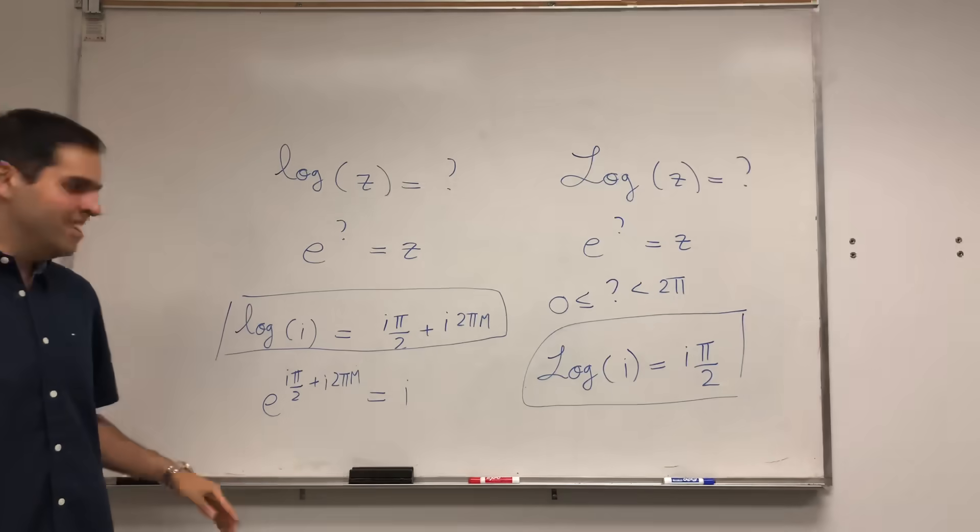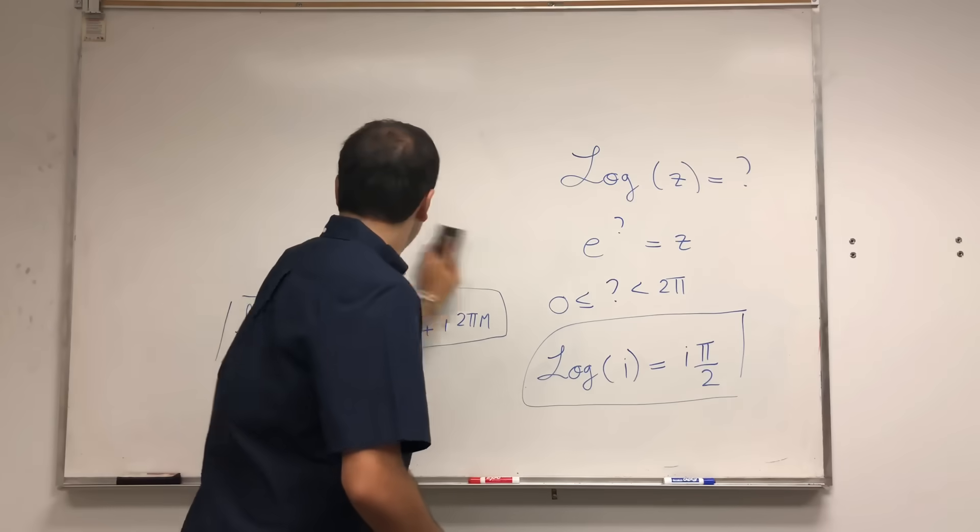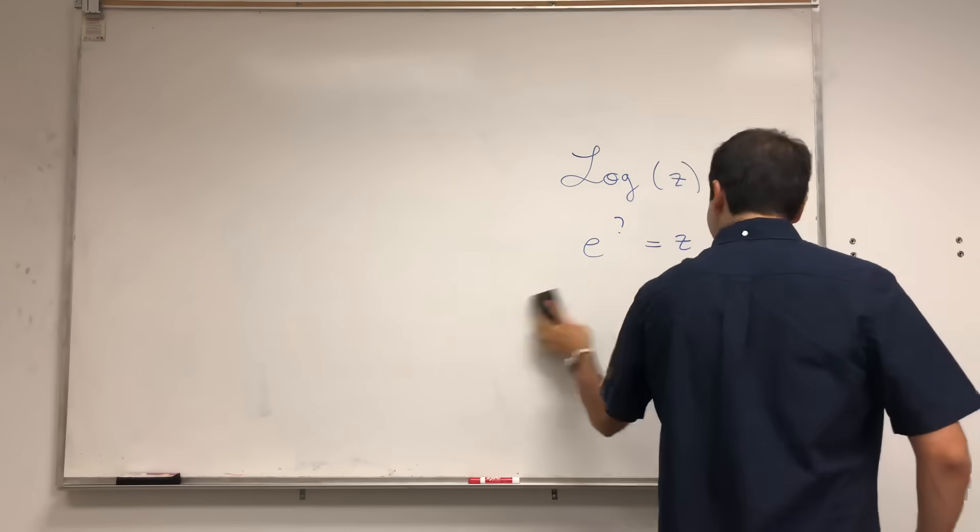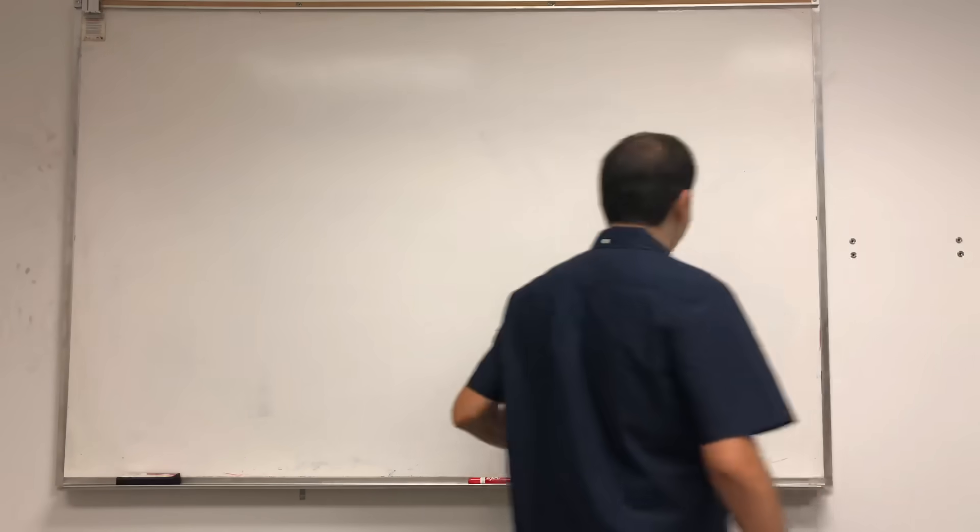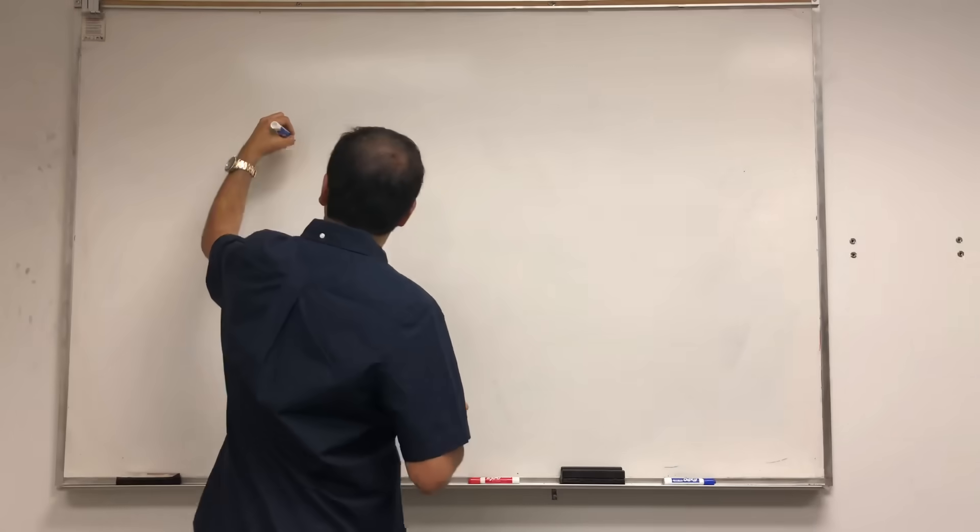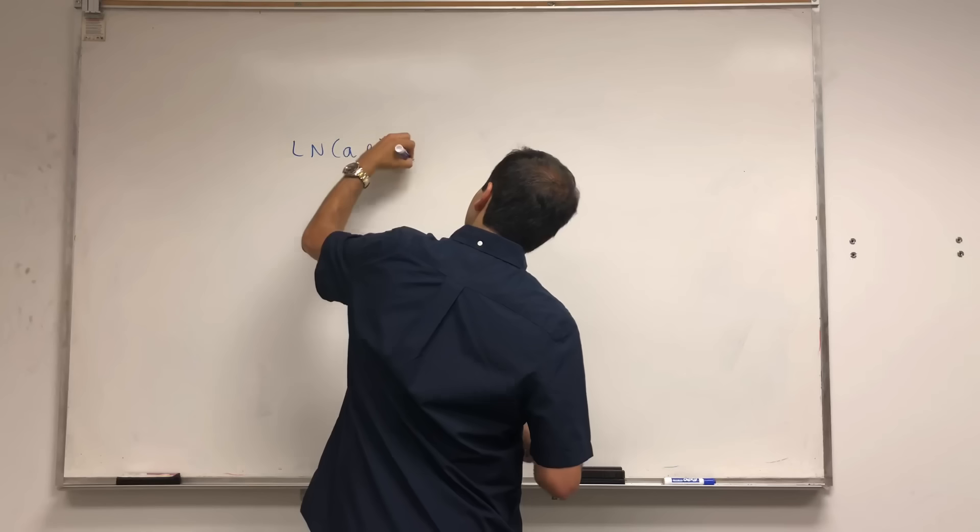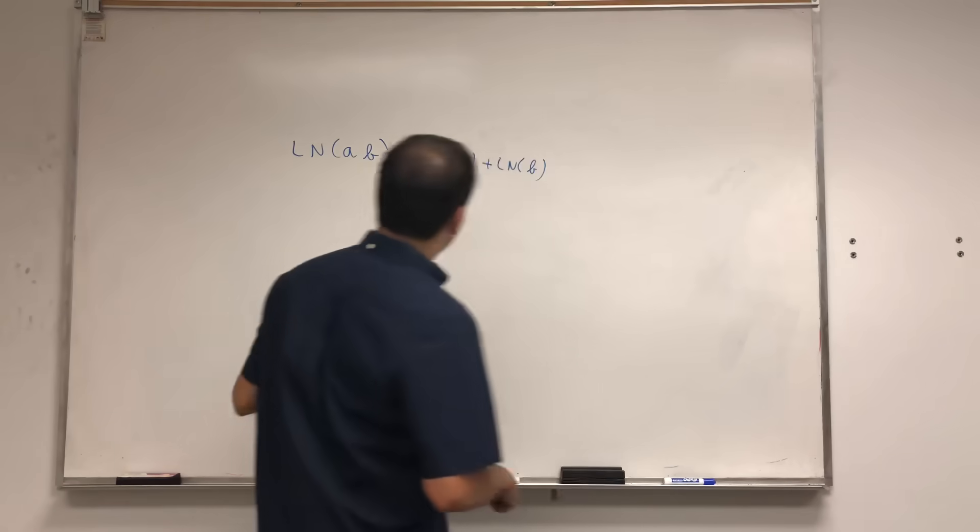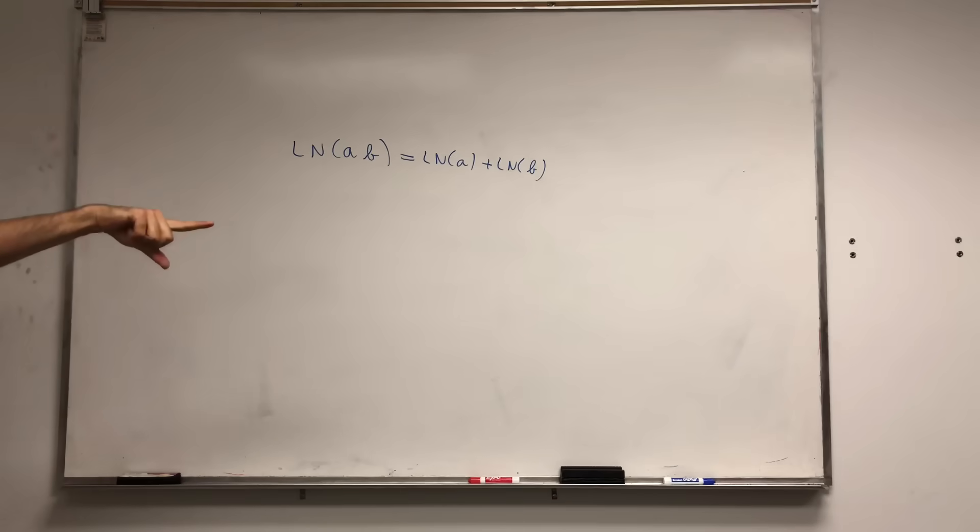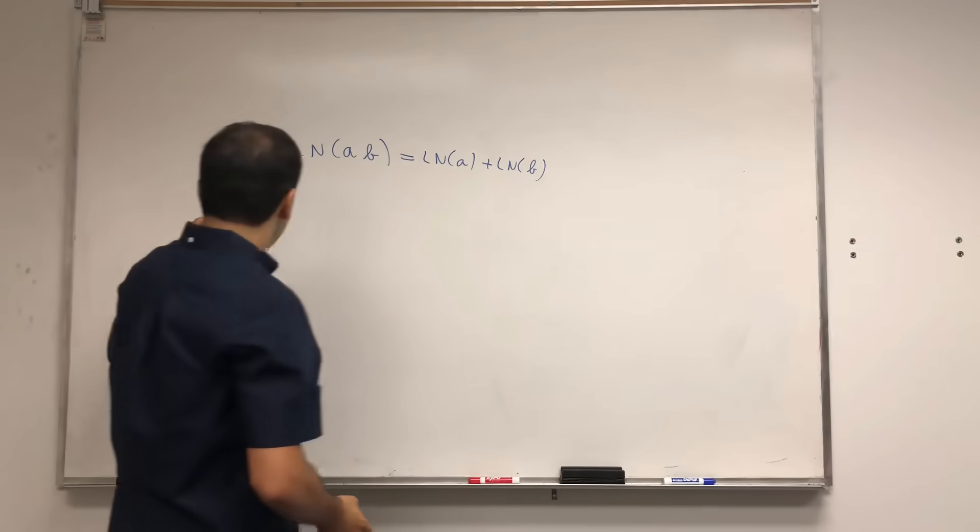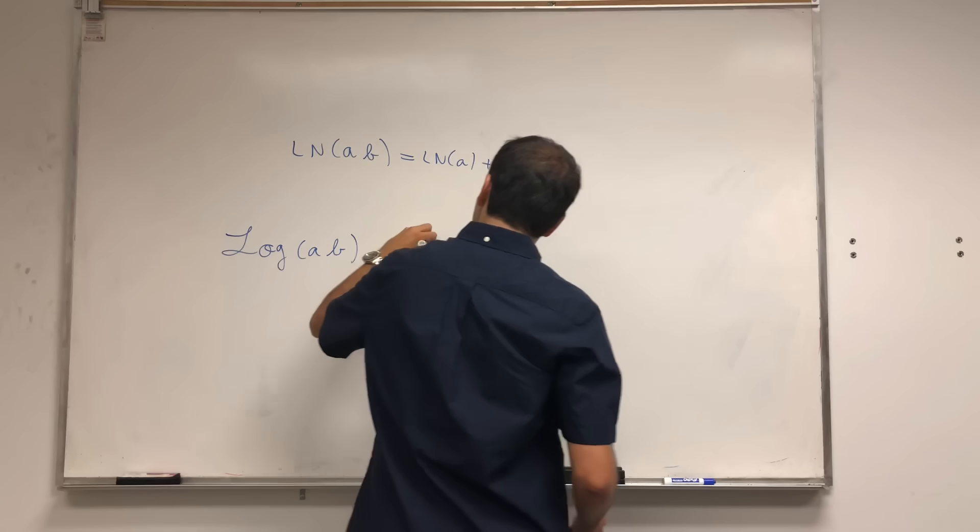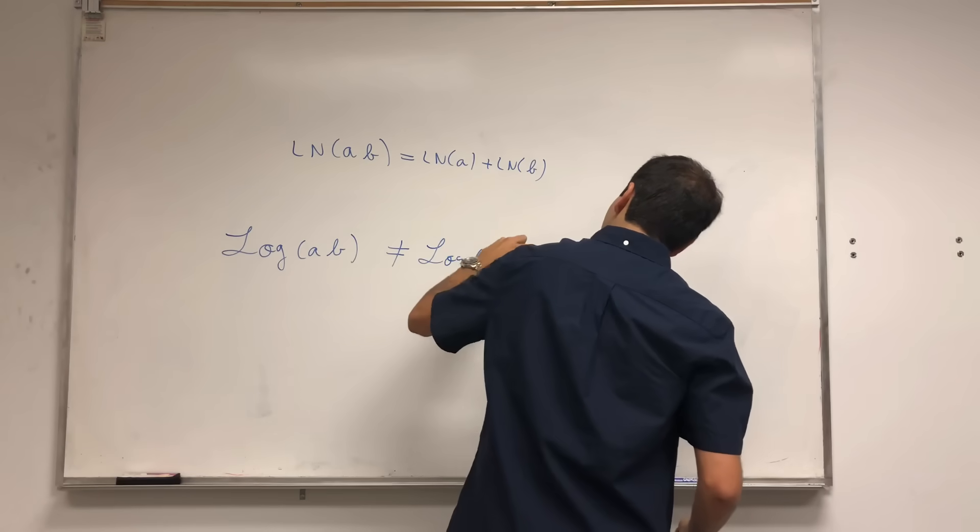So, that said, there is an interesting thing about this, because the interesting thing in complex analysis is that a lot of stuff that was true for calculus is not necessarily true anymore. Because one thing that was true in calculus is that ln of AB, it's ln of A plus ln of B. That said, if you take the principal log with the capital L, this is not true anymore. It's not the same as log of A plus log of B.